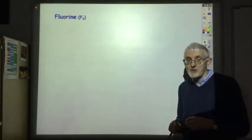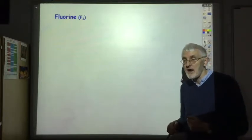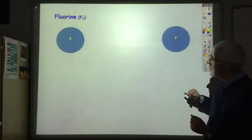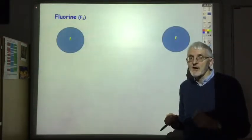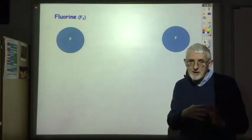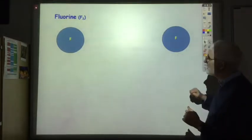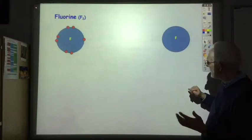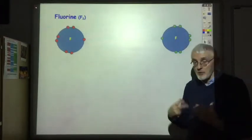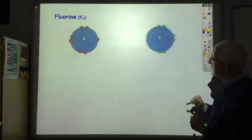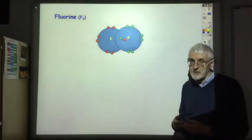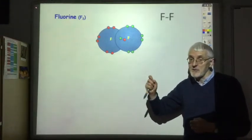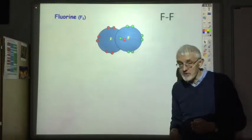For example, you might be asked to draw a diagram showing all outer electrons to explain how a fluorine molecule shares electrons. Fluorine has the electron arrangement 2,7 - we are not interested in the inner two electrons, just the seven outer electrons. One fluorine atom has seven outer electrons, the other has seven; they both want eight outer electrons. If they share a pair of electrons, they both now see eight electrons. Remember: show all outer electrons, not just the ones involved in forming the covalent bond.